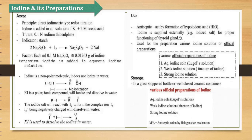Ab next hamare paas aata hai iodine kaise ionize karta hai. Usually water ko H⁺ aur OH⁻ mein todega, lekin iodine jo hai wo two iodine ions mein nahi toot ta. To uske liye potassium iodide daalna padta hai. Potassium iodide dissociate karta hai into K⁺ and I⁻. Yeh jo K⁺ hai yeh help karta hai iski ionization mein, aur jiske wajah se hamare paas I₃⁻ ek ion mein jaata hai which dissolves in water. Isliye hum potassium iodide use karte hain iski solution banane mein.